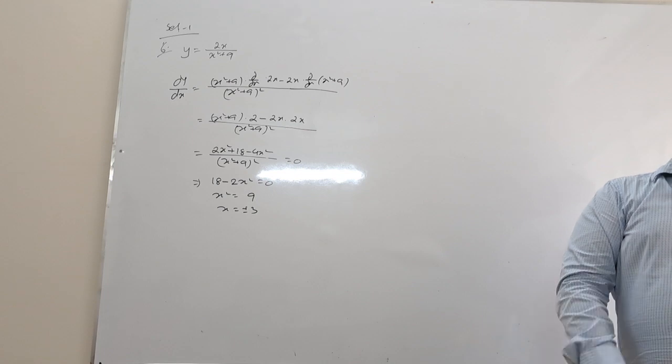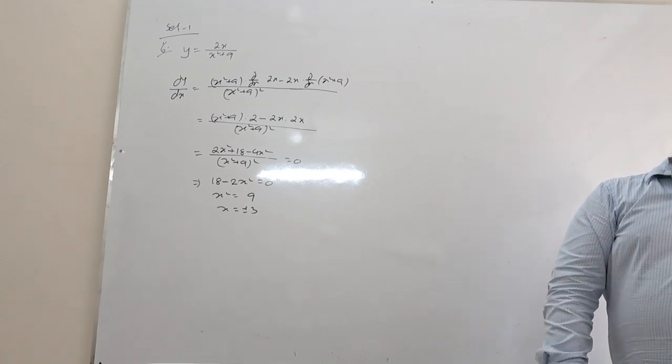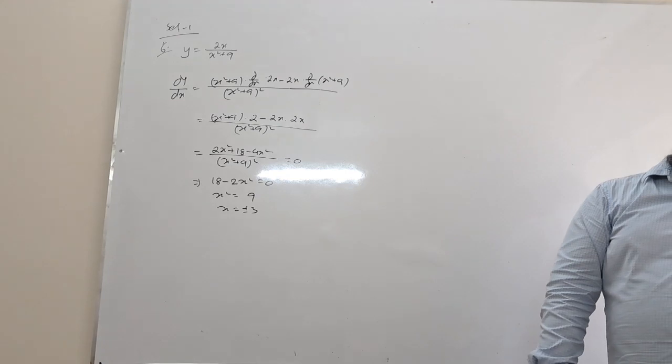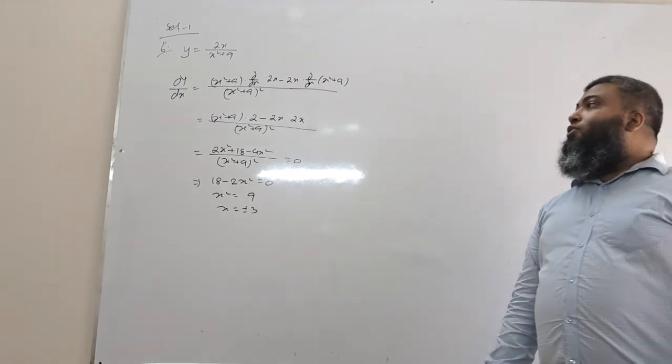Given that x is increasing at a rate of 2 units per second, find the rate of increase of y when x equals 1.